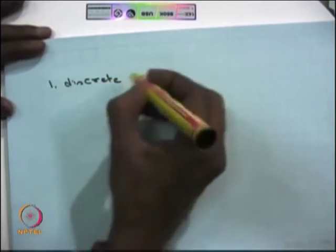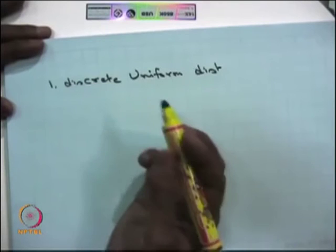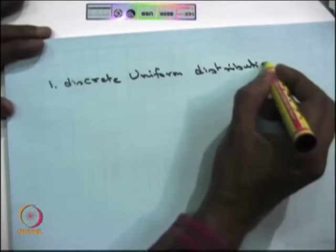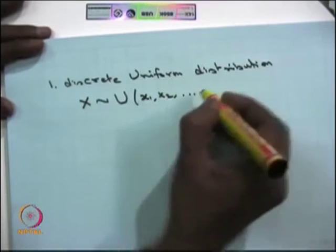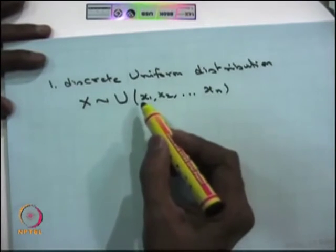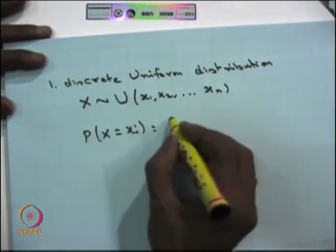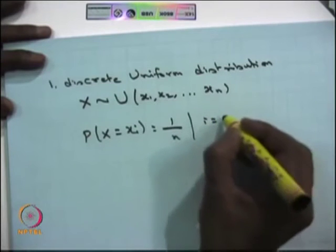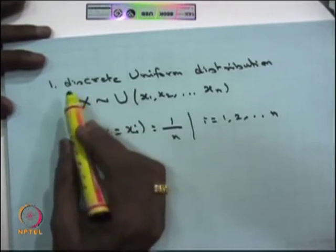Here I am going to list out a few standard discrete and continuous random variables that we are going to use in our course. The first one is the discrete uniform distribution. Suppose the random variable X is discretely uniformly distributed with discrete points X1 to Xn, meaning X takes possible values X1 to Xn with equal mass 1/n at each Xi, and 0 otherwise. This is called a discrete uniform distribution.